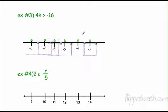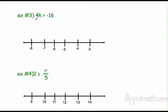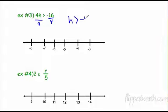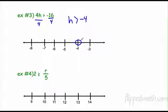These are all one-step today. The opposite of multiplying by 4 is divide by 4, so h is greater than negative 4. Start at negative 4, not including it because it's not equal to. I want all the numbers bigger than negative 4, which are to the right.